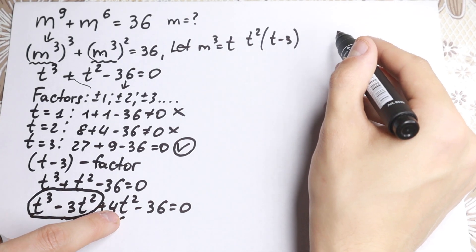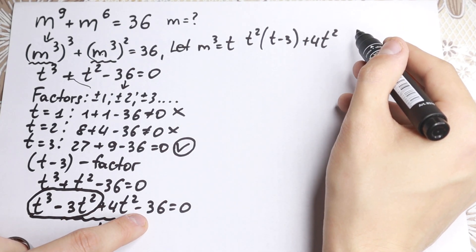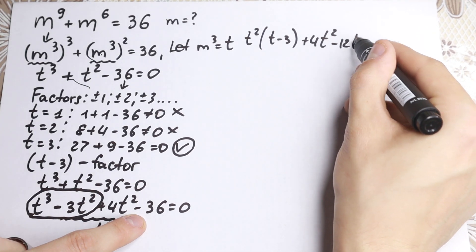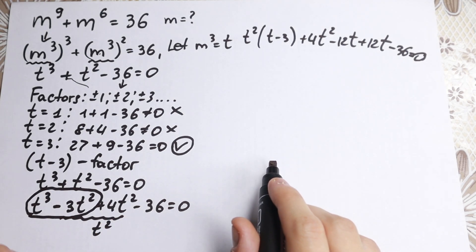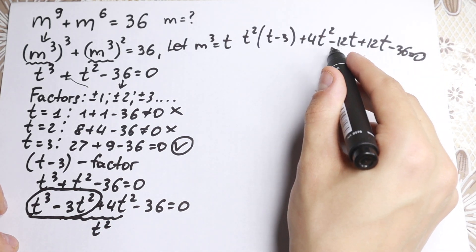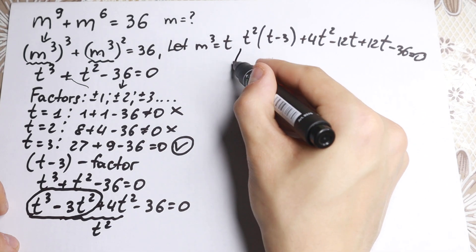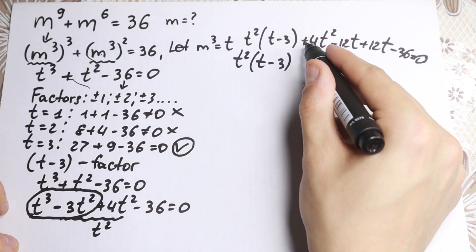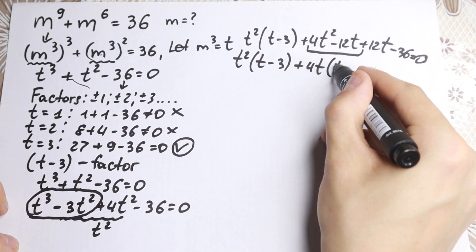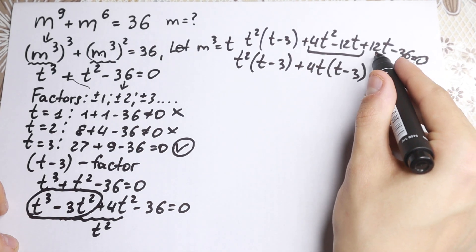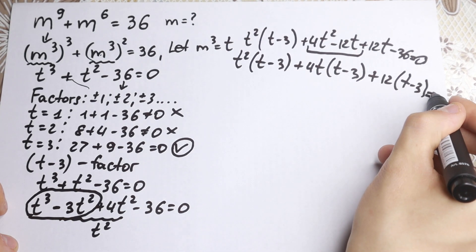Now for the remaining 4t² − 36: we write 4t² as 4t² − 12t + 12t, and −36 stays. Factoring 4t from (4t² − 12t) gives 4t(t − 3). Then from 12t − 36, factoring 12 gives 12(t − 3). So we have the factor (t − 3) appearing in all three groups.